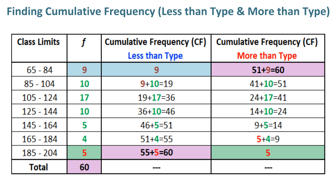To find cumulative frequency more than type, the last frequency F7, which is 5, becomes the first cumulative frequency more than type from below. For the second cumulative frequency more than type, we add F6 (which is 4) with the preceding frequency F7 (which is 5) to get 9. In this way you find the rest of the 5 cumulative frequencies more than type. The last or 7th cumulative frequency becomes the total frequency, which is 60, highlighted in purple. Thus, if your total frequency is 60 or any value, you can write it directly without calculation in both cumulative frequency types in the cell highlighted as purple, to save time.